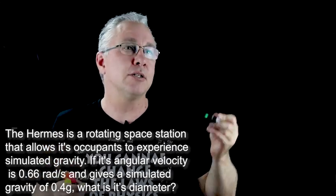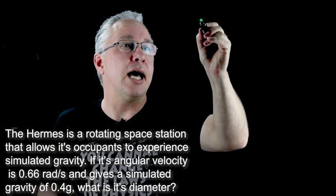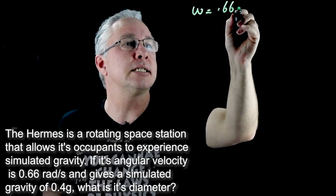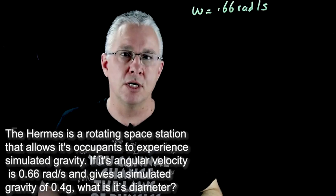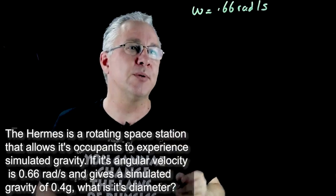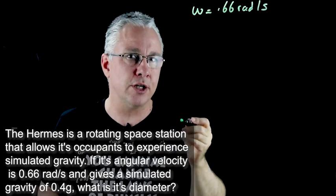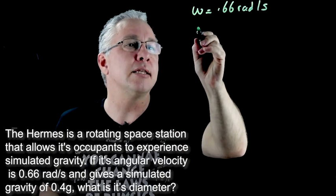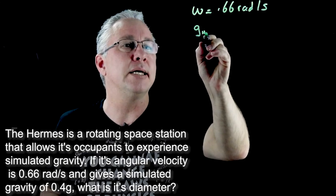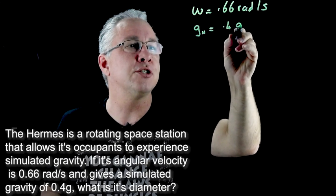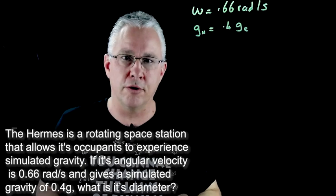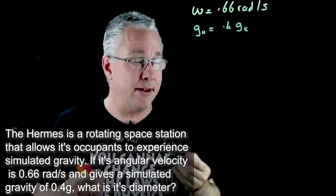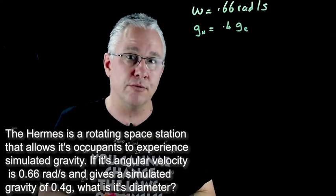Now in this question we're given a couple of constraints and we're told first of all that the rate of turn is equal to 0.66 radians per second. So that's the angular velocity. The other thing we want to know is the acceleration due to gravity that they experience and from the book it's actually given and so the acceleration at least on the Hermes is equal to 0.4 of the acceleration due to gravity that is on earth. So it's not actually 9.8 meters per second, it's only 40% of that and in fact that's all the information we need to solve this problem.